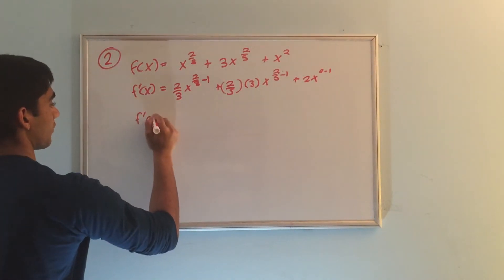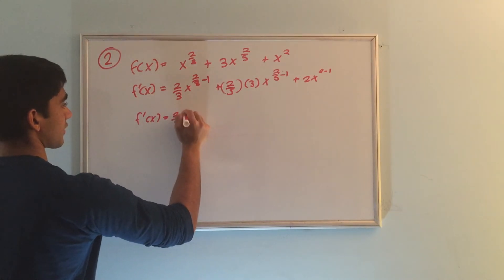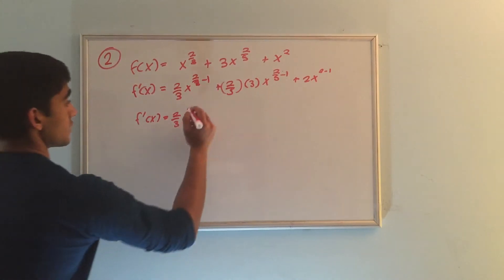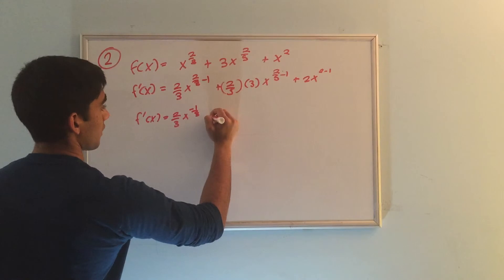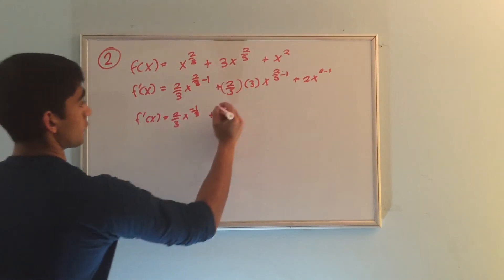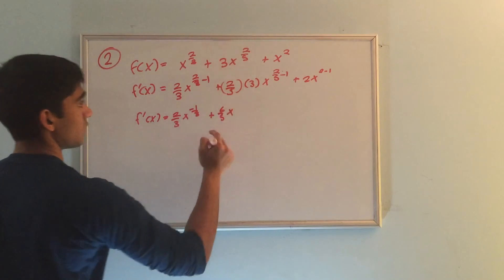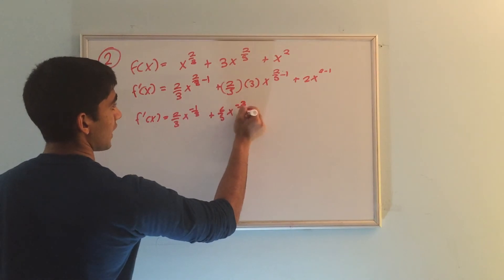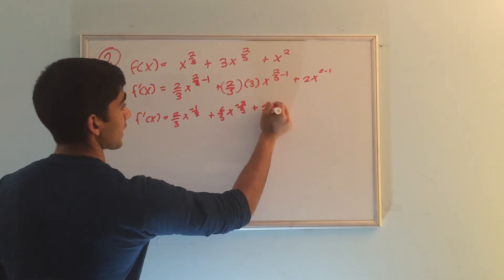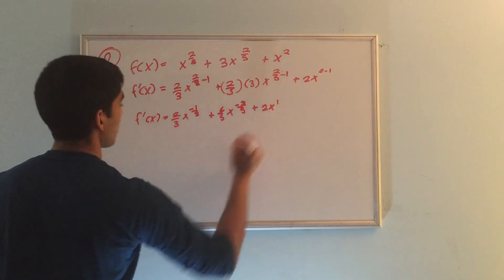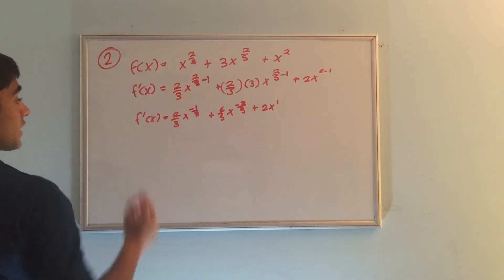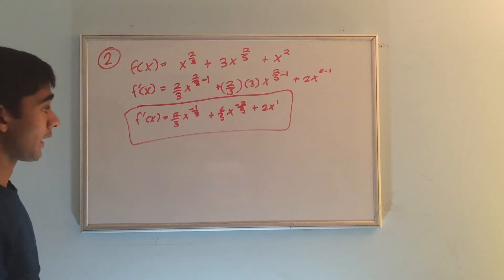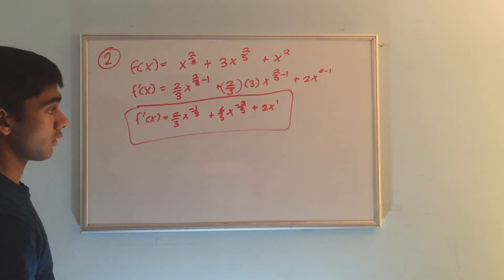Now we want to simplify. We get f prime x equals 2 thirds x to the 2 thirds minus 1, which is 2 thirds minus 3 over 3, equaling negative 1 third, plus 2 over 5 times 3 equals 6 over 5, x to the 2 fifths minus 1, which is 2 fifths minus 5 over 5, equaling negative 3 over 5, plus 2x to the 1. So the derivative equals 2 thirds x to the negative 1 third, plus 6 fifths x to the negative 3 fifths, plus 2x.